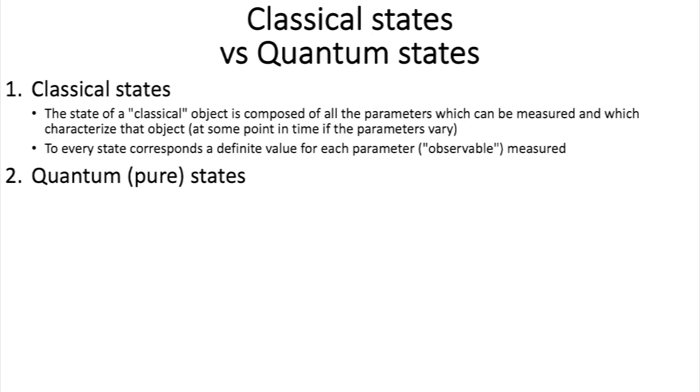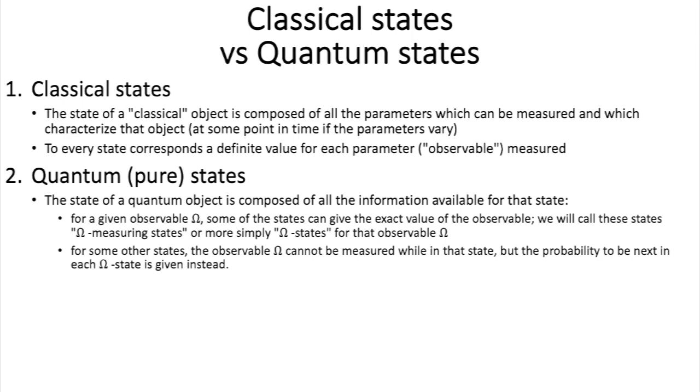In quantum physics, there is a thing called the pure state, which basically is composed of all the information available for that state. However, in quantum physics, there are two types of pure states. There is the omega state from which you can measure, just like in classical physics, the exact value of an observable property. While for some other states, which are not omega states, you cannot observe and you cannot measure omega while you are in that state. But what you can do is to get the probability to be in a given omega state the next time you will make a measurement.